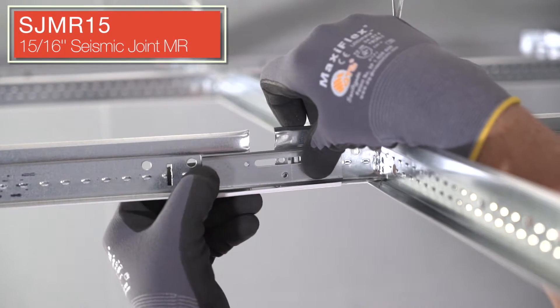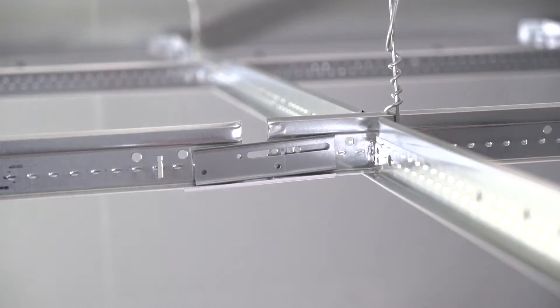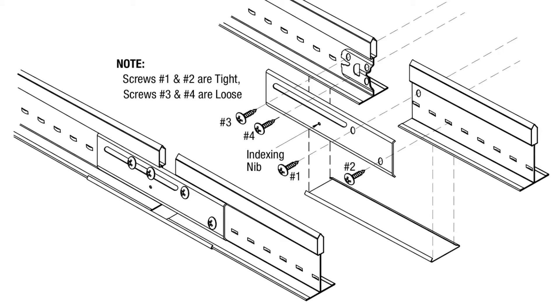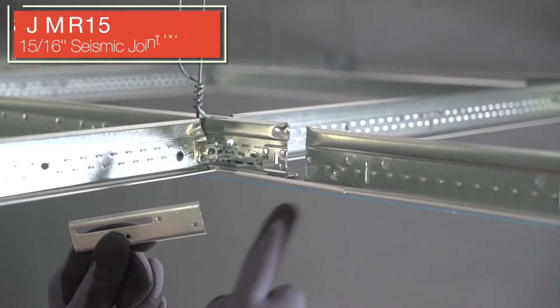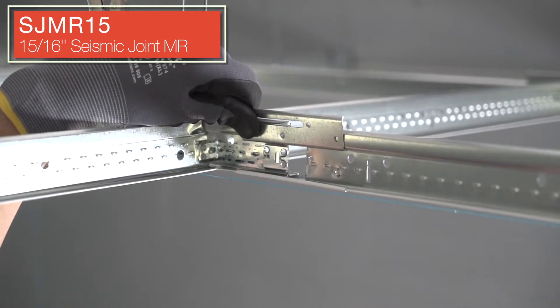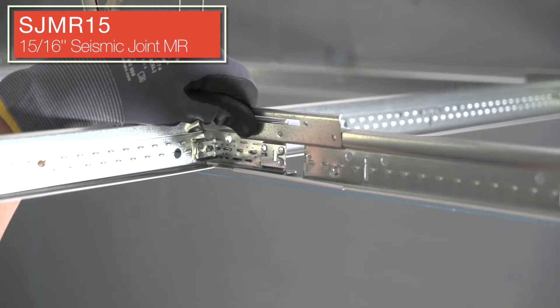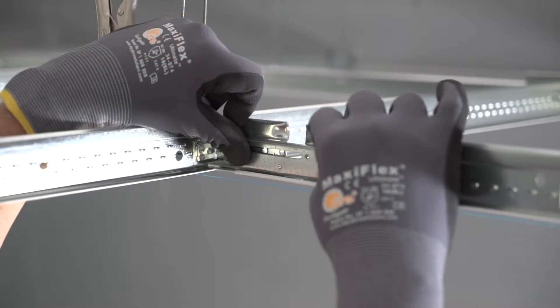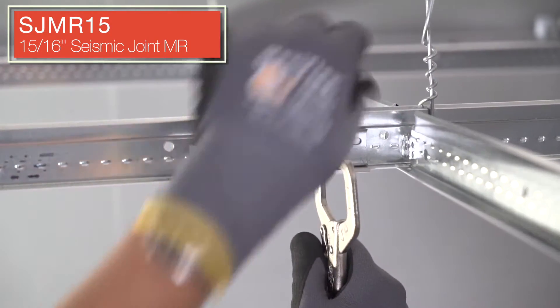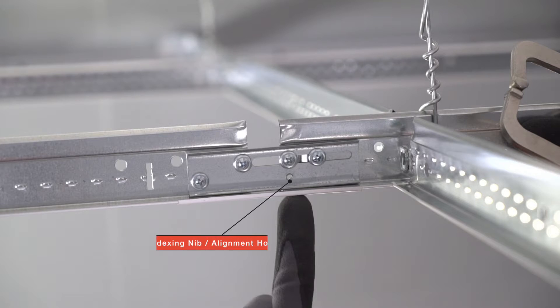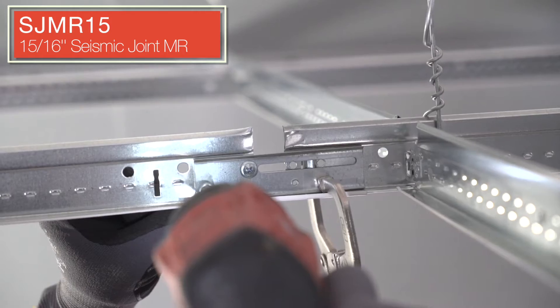To secure both mains back together, we install the SJMR15 or Seismic Joint Main Runner for 15/16th grid. We also have the SJMR09 for 9/16th inch grid systems. The SJMR clip has pre-positioned holes that will line up with factory pre-positioned holes in the main runners. Make sure to leave the indexing nib or alignment hole free and clear. As long as this hole is open and clear, you are assured of being lined up correctly.